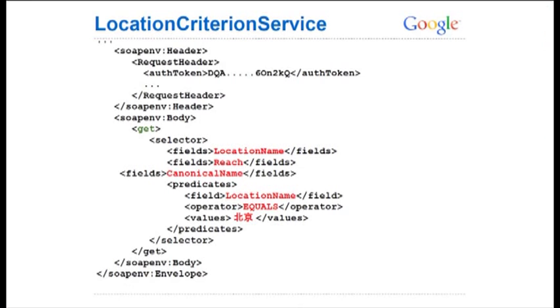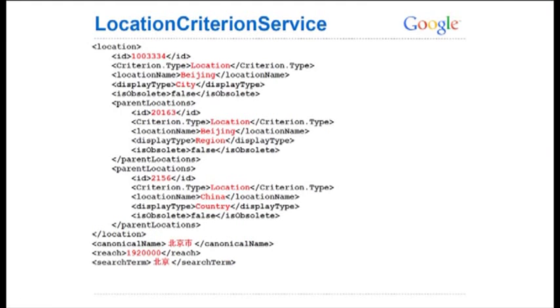We also have a new service called the Location Criterion Service — kind of like a search service for matching different geographic terms with the corresponding AdWords objects. In this example, I'm searching for a location using our generic selector format, making a predicate to search where the location name equals a set of Chinese characters, which also shows how the service works cross-language. The response shows those Chinese characters correspond to Beijing — criterion type location, display type city — and it gives us back the parents showing Beijing city is within the Beijing region, which is within China, plus the canonical name.